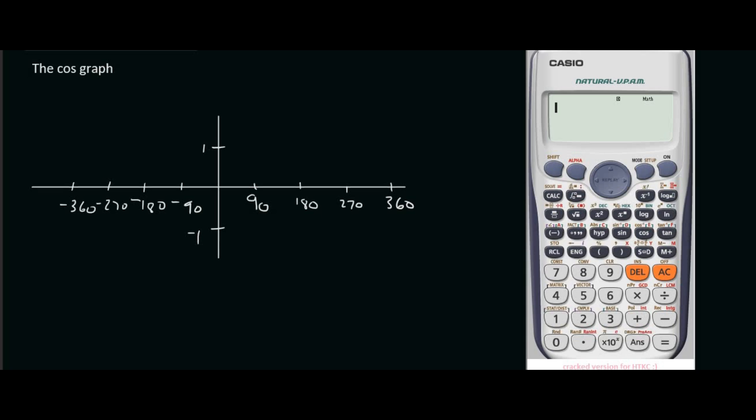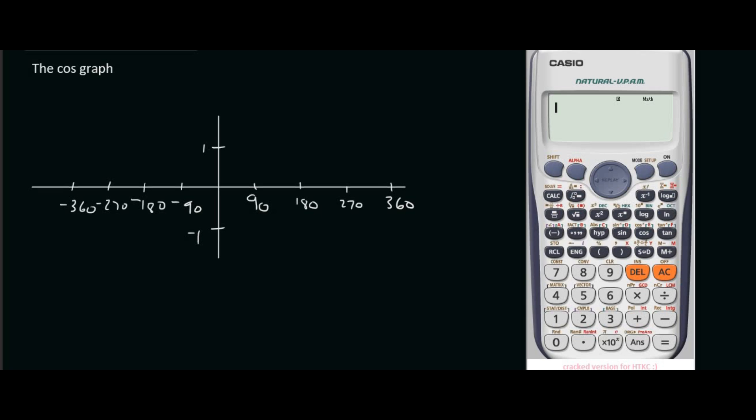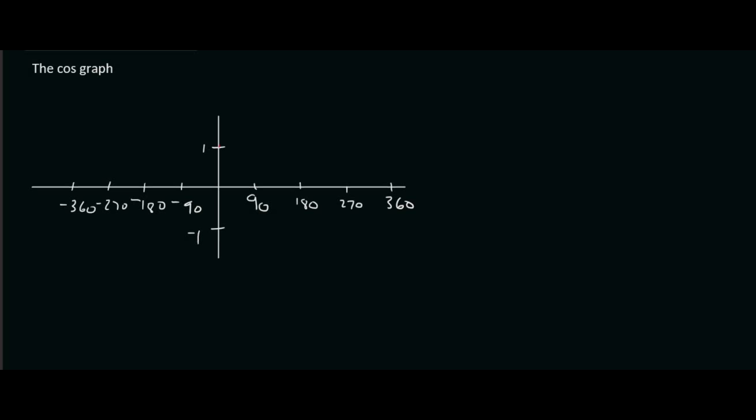Okay, so let's get our calculators. So we're going to start off with 0 degrees. We're going to type in cos of 0 and that gives us a value of 1. So we can go make a little dot at 0 degrees. We can make a little dot at 1.